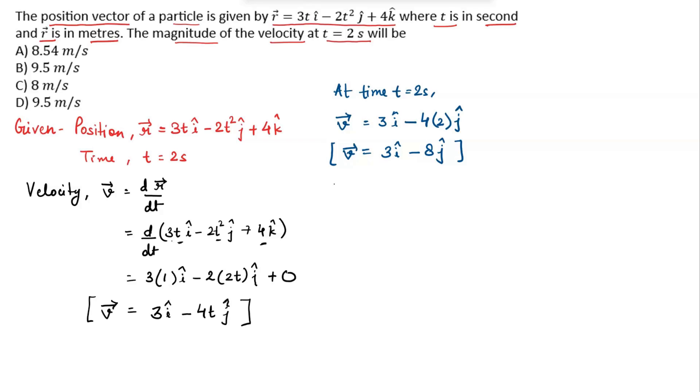So now, let's find the magnitude of the velocity. The magnitude of the velocity can be given as square root of v_x squared plus v_y squared.